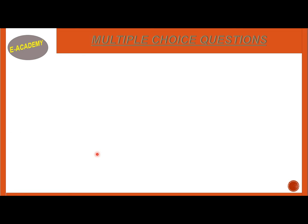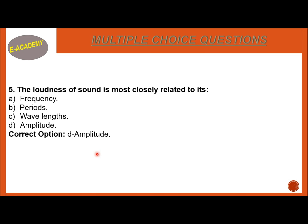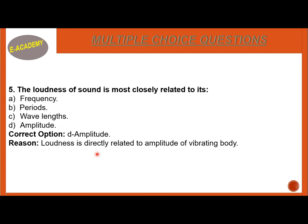Sound waves cannot travel in space. Number 5: The loudness of sound is mostly related to its frequency, period, wavelength, or amplitude? The correct option is D — amplitude. Loudness of sound is most closely related to the amplitude of the vibrating body. If the amplitude increases, the loudness increases.